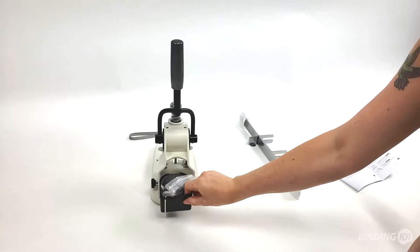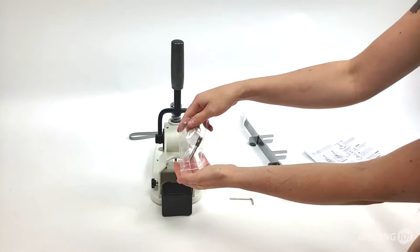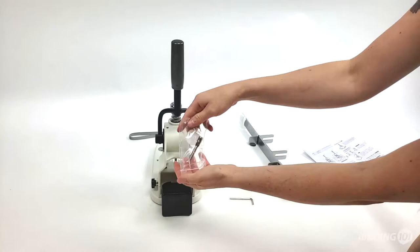The base is sturdy and heavy to help hold it in place. On the back is the waste bin with additional supplies, including an Allen wrench to change the drill bits, an extra ¼ inch drill bit, and an extra punch pad.